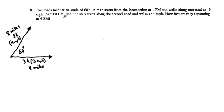Problem 8: two roads meet at an angle of 60 degrees. A man starts from the intersection at 1pm and walks along one road at 3 mph. At 2pm another man starts along the second road at 4 mph. How fast are they separating at 4pm? By 4pm the first man has gone 9 miles (3 hours × 3 mph) and the second 8 miles (2 hours × 4 mph). dx/dt for the first man is 3 mph.